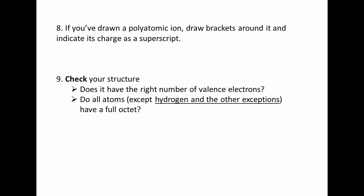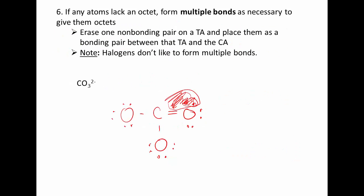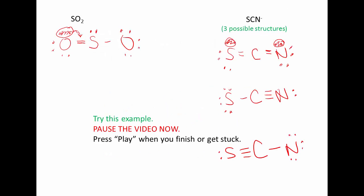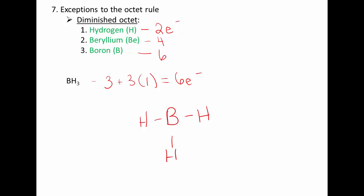The last two steps are pretty simple. If you've drawn a polyatomic ion, I want you to draw brackets around it and indicate its charge as a superscript. Let's go back and I'll show you how this is done. So, for CO3 2- we're going to draw brackets around it with a 2-. For each of our structures for SCN- we're going to draw brackets with a minus. This just indicates to anybody who has looked at your structure where that extra electron or electrons are coming from.